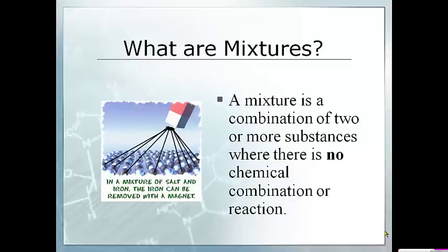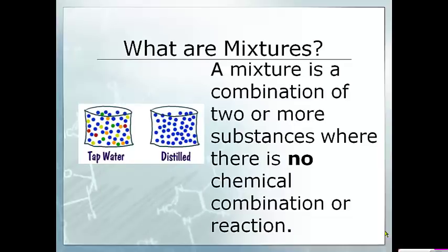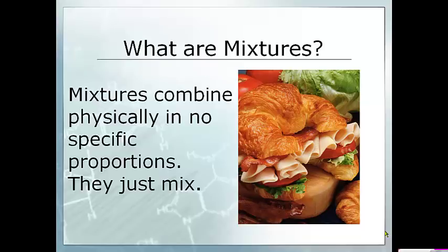A mixture is a combination of two or more substances and there's no chemical reaction, no chemical combination. It's just physically mixing two things together. Mixtures combine physically in no specific proportions. The key with mixtures is that you can separate them relatively easily. You don't have to do electrolysis or any kind of chemical reaction to separate them, because the individual pieces in a mixture didn't chemically bond together — they're just physically sitting next to each other.